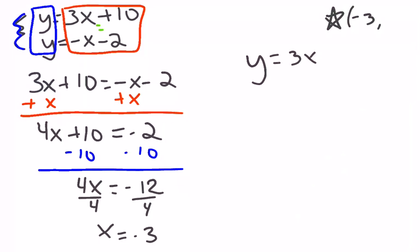If you want to be different, then you can do the second one. We should end up at the same answer. That's what it means to be a solution. So y equals 3 times negative 3 plus 10.